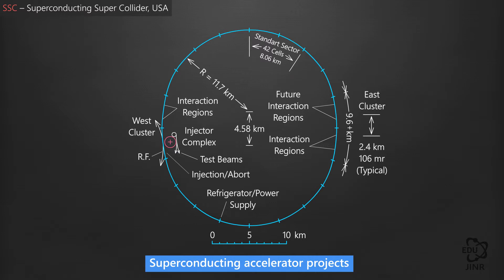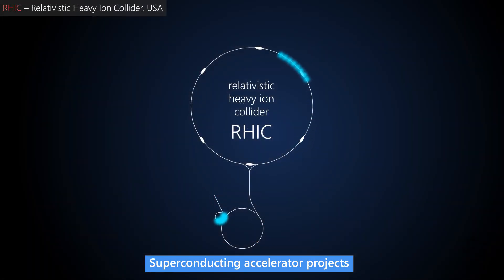The most ambitious project devised by mankind was the project of superconducting supercollider, which was launched in the late 80s in the US. As part of this project, an accelerator with a superconducting magnetic system with a circumference of 87 km was expected to be built.